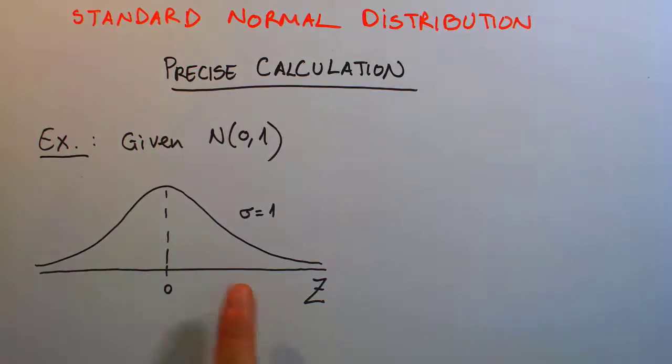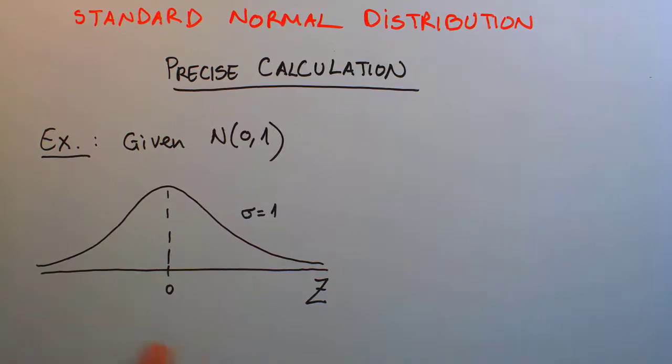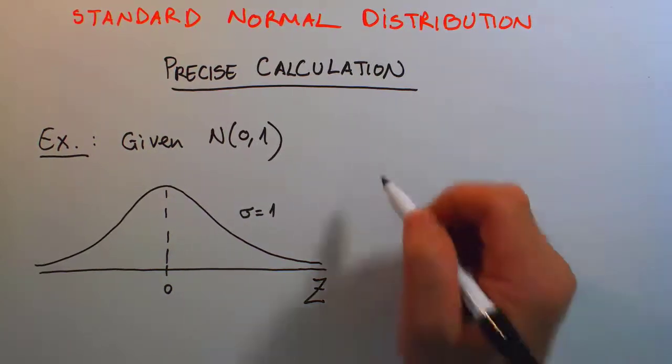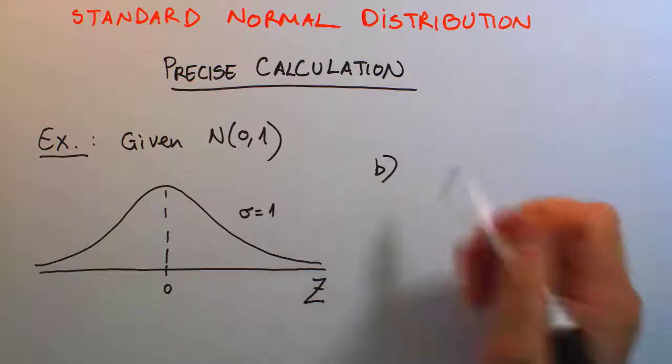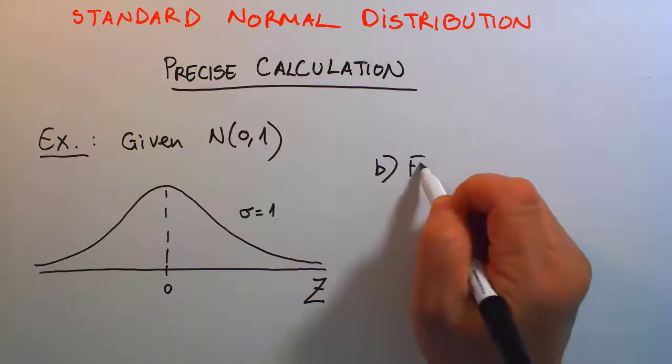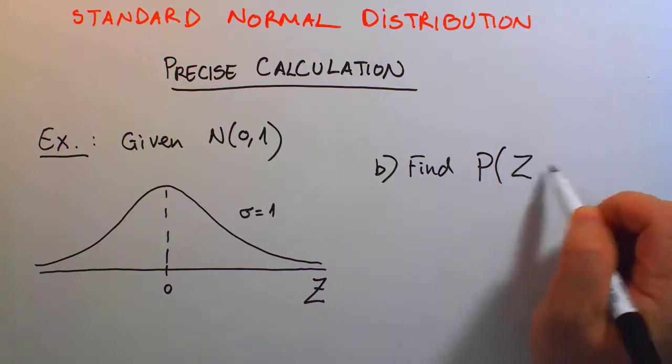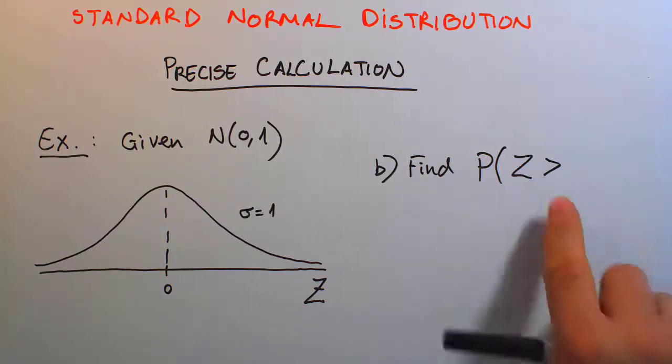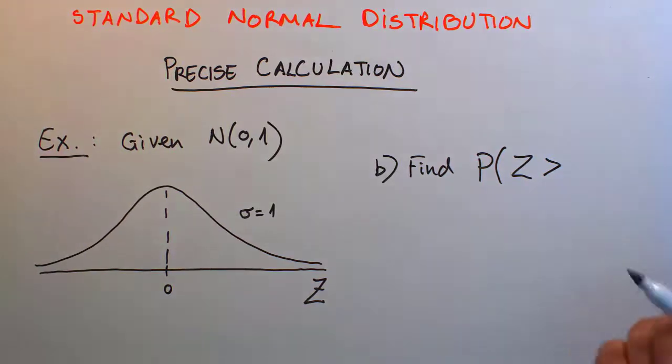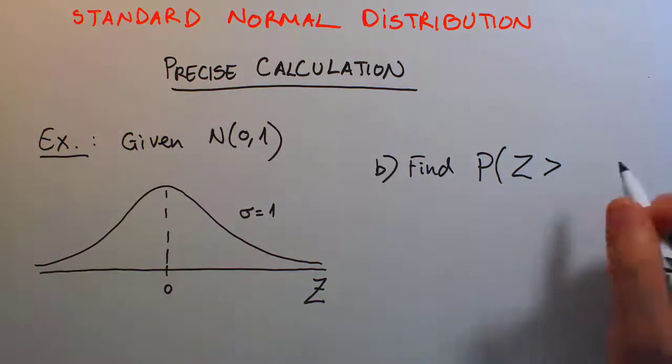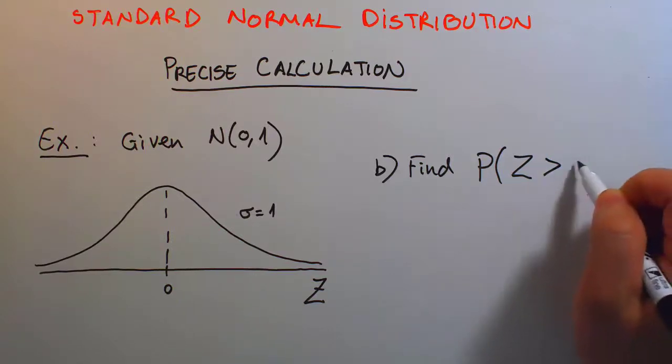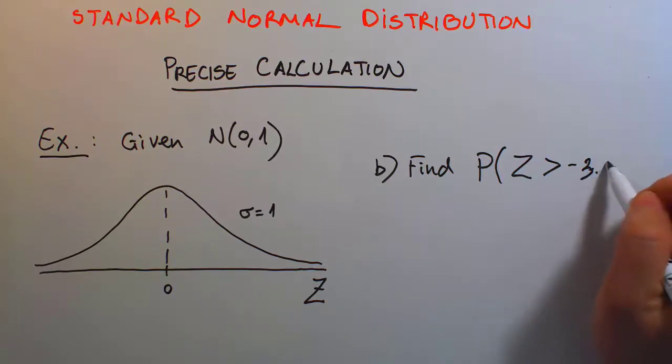On that same bell curve, in the same example, let's answer another question. How about finding the probability where my z-score is being anywhere greater than negative 3.35. I'm purposely skipping that equal sign to point out that the way to get the answer is exactly the same.